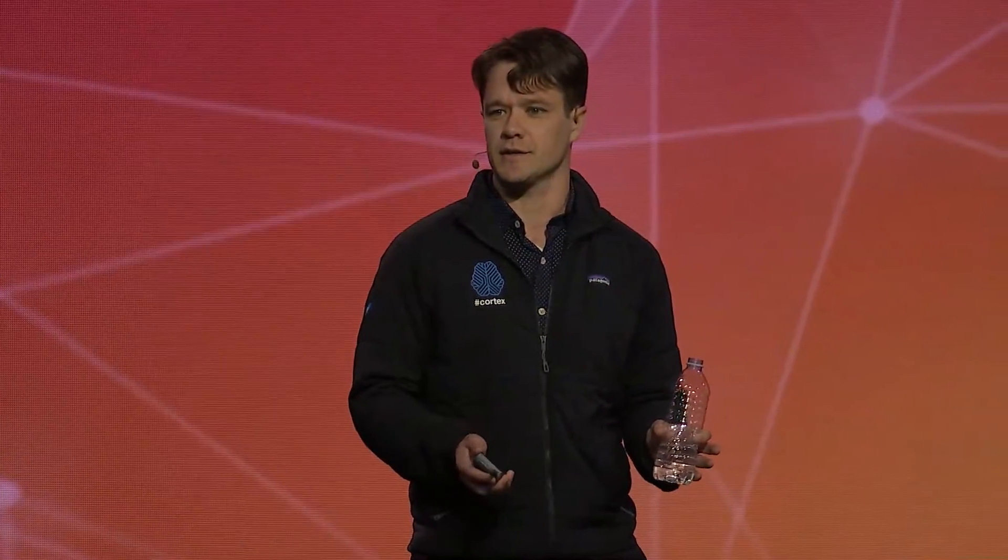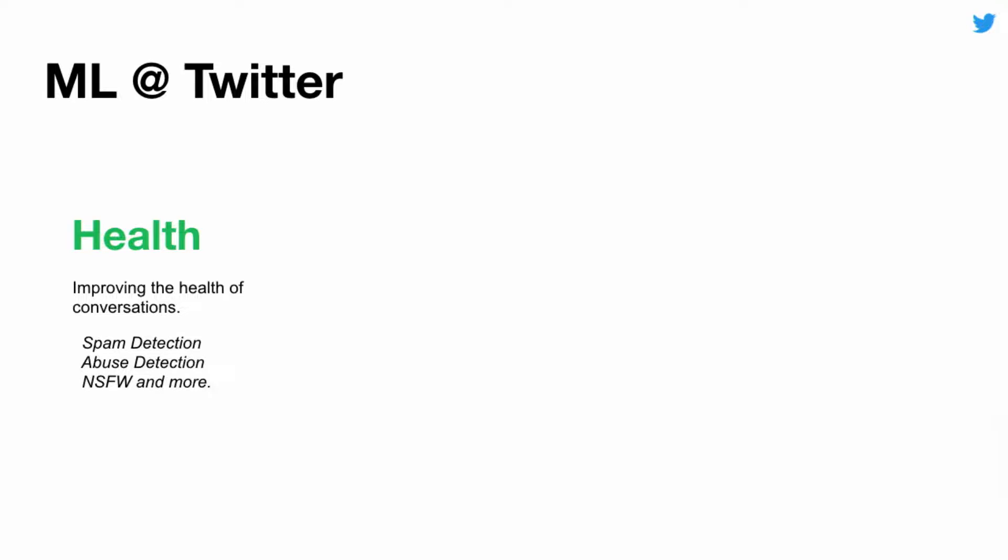Before we get into how we're accelerating ML at Twitter, let's talk about how we're using ML at Twitter. Twitter is largely organized against three customer needs, the first of which is our health initiative — you might think of it as user safety, but we think about it as improving the health of conversations on Twitter. Machine learning is already at use here. We use it to detect spam at scale and protect our users. Similarly, in the abuse space, we can proactively flag content as potentially abusive, toss it up for human review, and act on it before our users are even impacted.